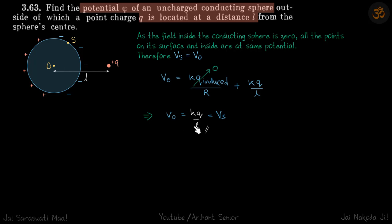Which gives V₀ is equal to K Q by L, which is same as V_S or any other point on this sphere.